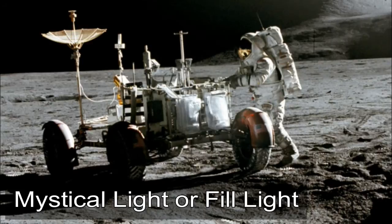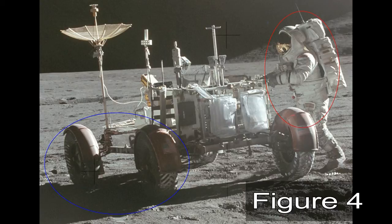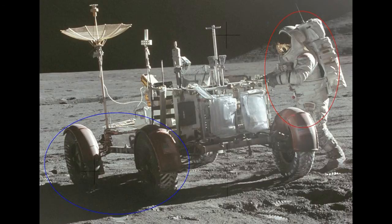Mystical Light or Fill Light: Figure 4 depicts an impossible situation if the sun was actually the only source of light on the moon. The sun is over to the right at a rather low angle, resulting, as would be expected, in a darker area on the left side of the rover. There are also shadows extending from the rover's left side wheels. However, on the rover's right, the astronaut is illuminated quite evenly on both the rear sun-exposed side and the front shaded side. This indicates a second light source — a photographic fill light — that is filling in the shadows just on the astronaut. This results in a better image, but is a very revealing aspect of the hoax.